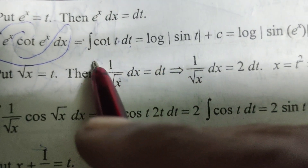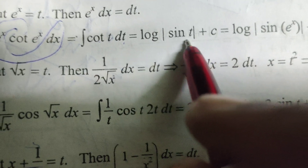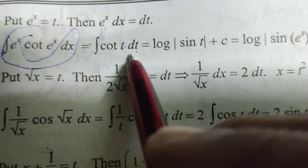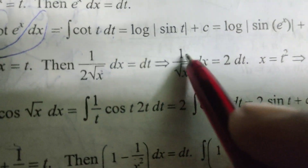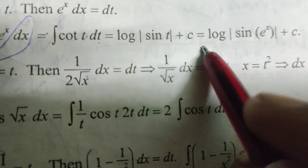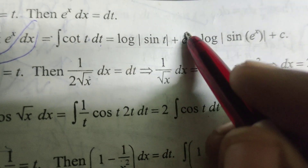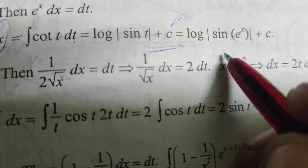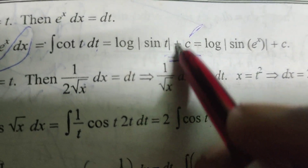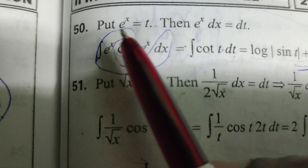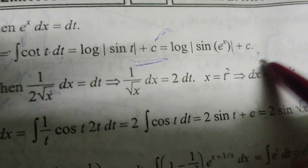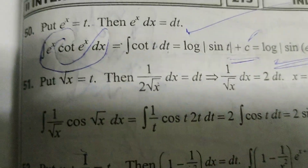Integrating cot(t): we know the formula gives log|sin(t)|. Therefore, log|sin(t)| + C after integrating and adding the constant C. Substituting back t = e^x, therefore log|sin(e^x)| + C. This is the solution to the given evaluated integral.